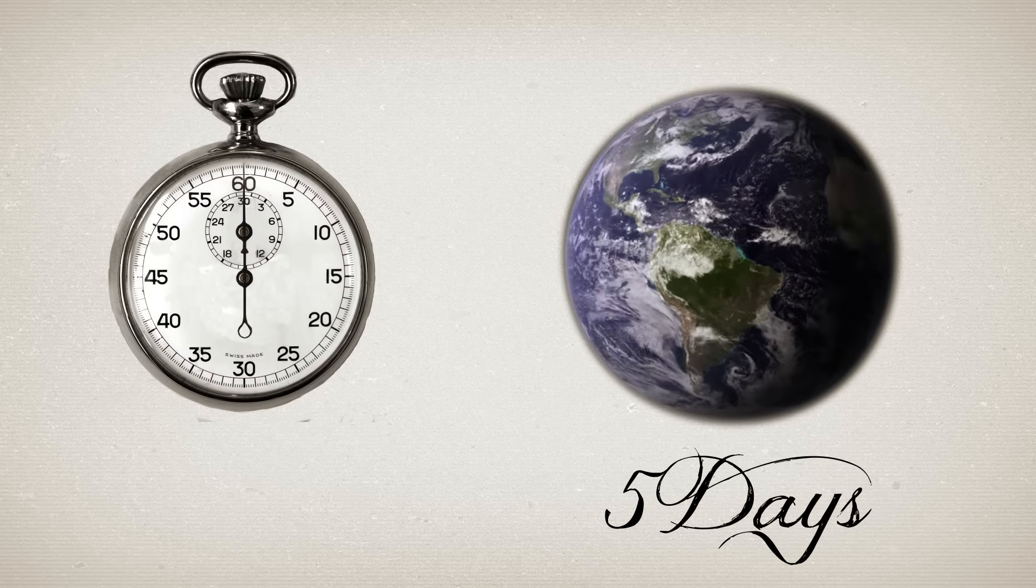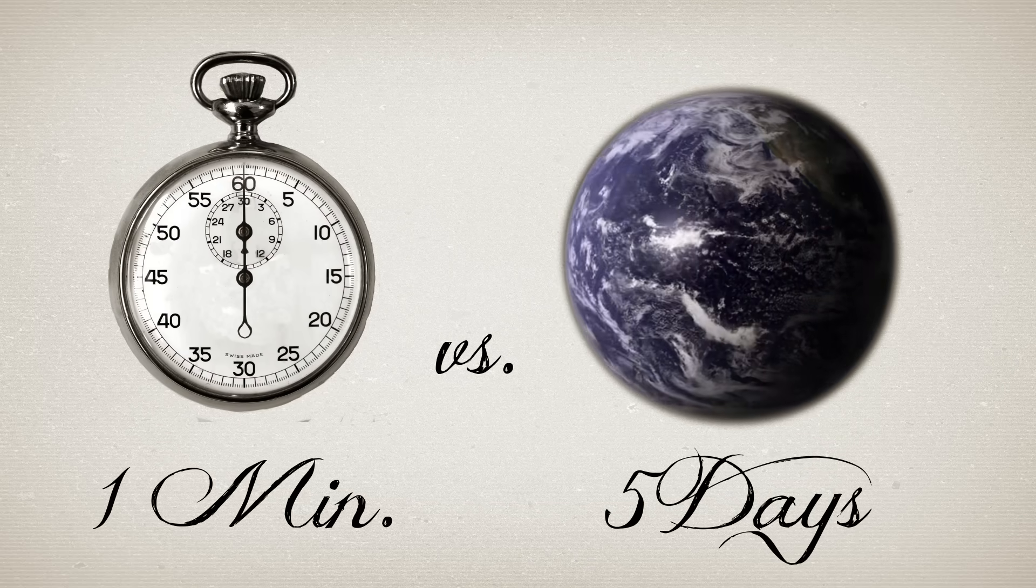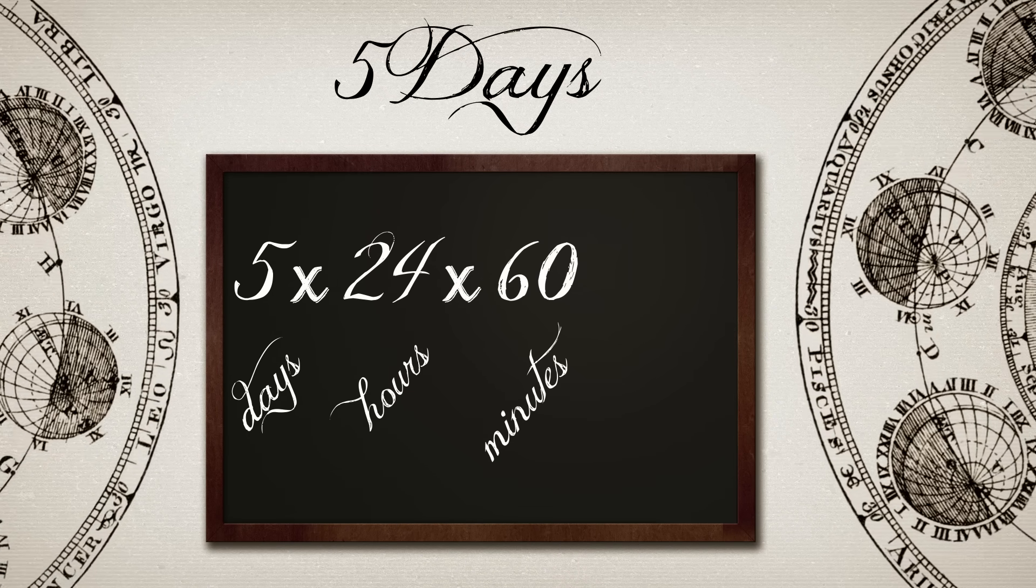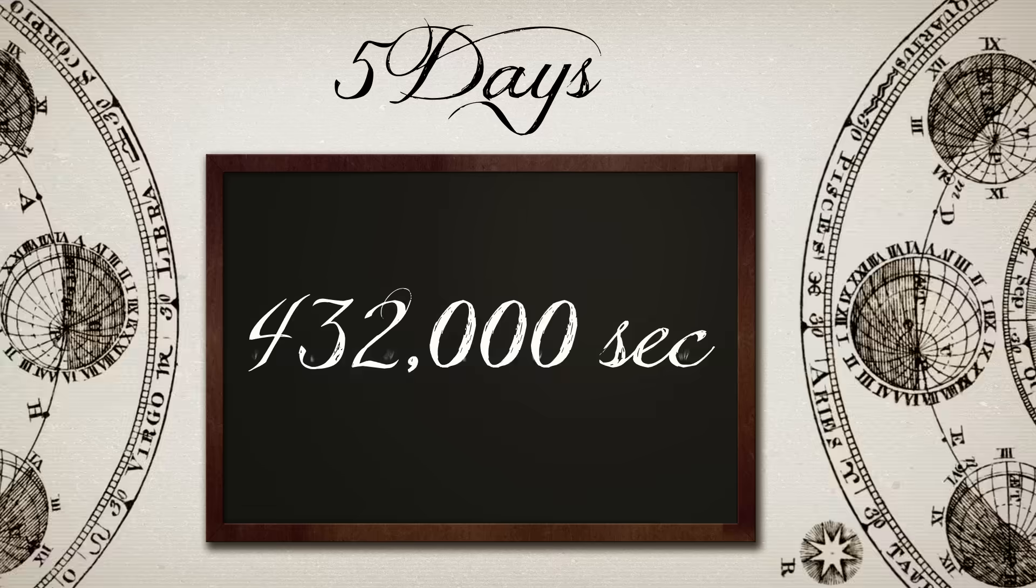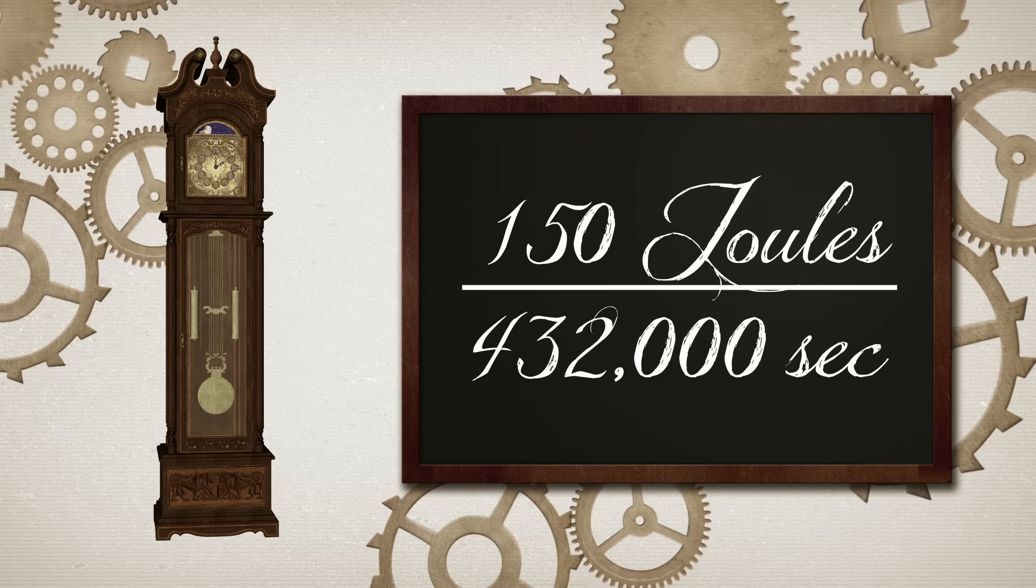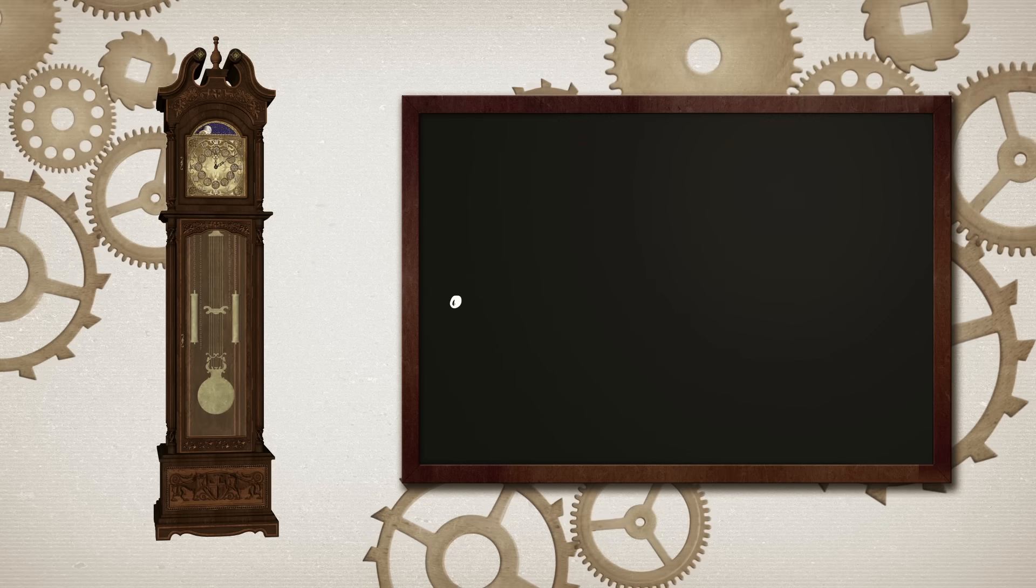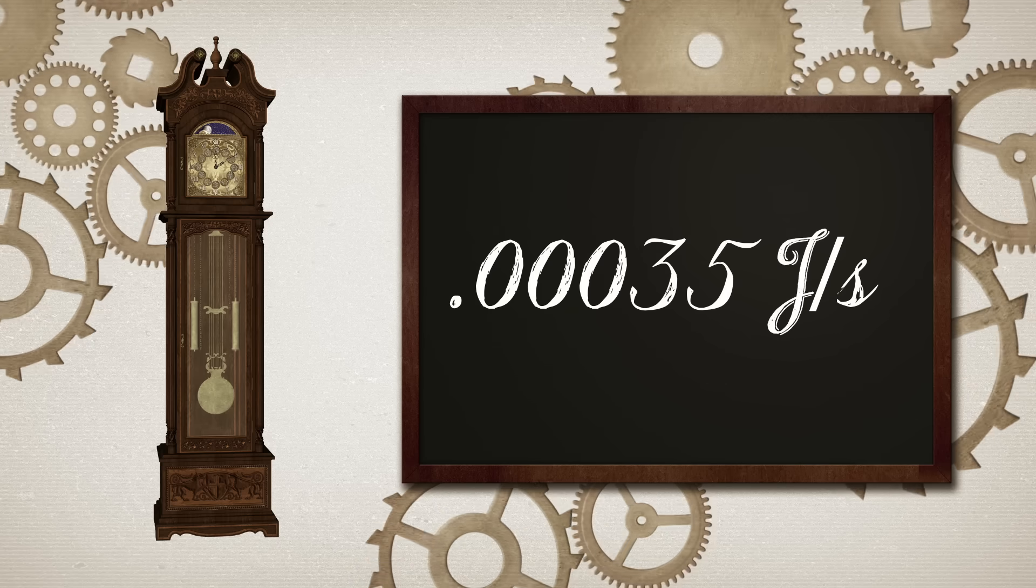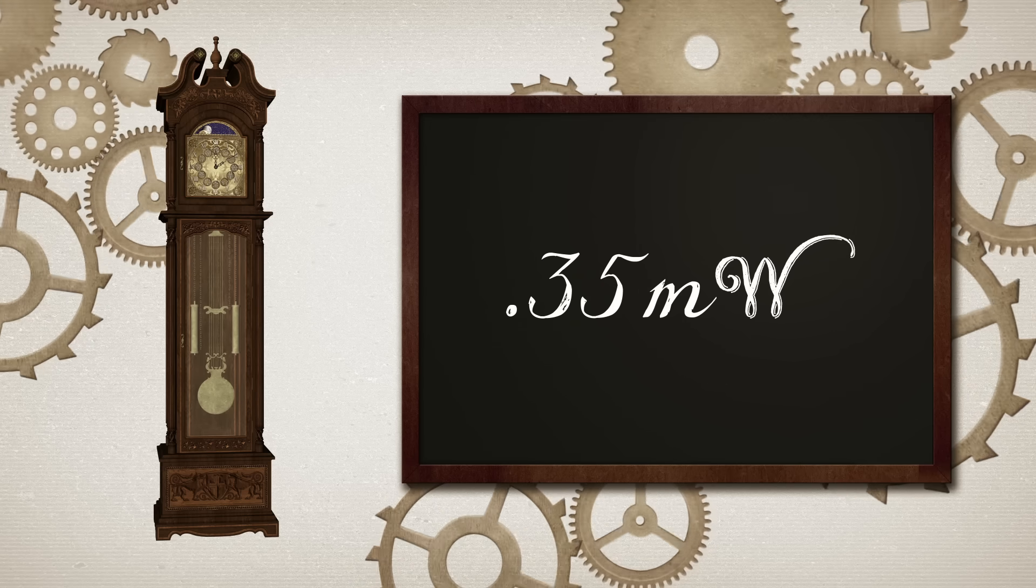But this time it took 5 days rather than a minute. 5 days is 5 times 24 times 60 times 60 again, or 432,000 seconds. So we divide the work done by the time, and find an answer of about 0.00035 joules per second, or about 0.35 milliwatts.